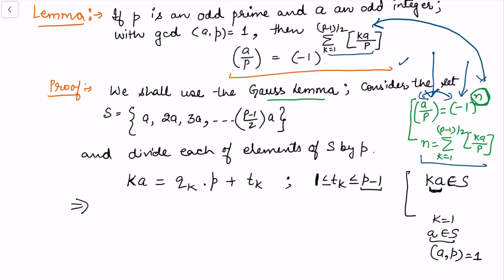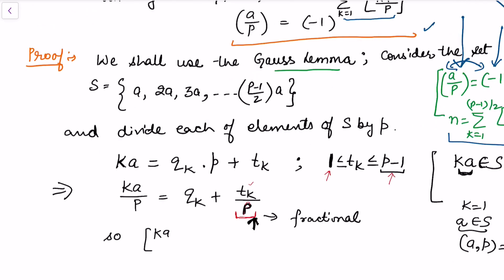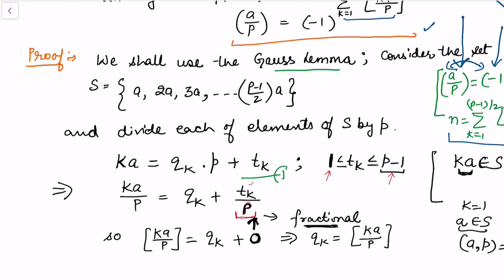Dividing the equation ka = qk · p + tk through by p gives ka/p = qk + tk/p. Since tk ranges from 1 to p-1, the term tk/p is strictly fractional. Taking the greatest integer function on both sides, floor(ka/p) = qk, since the fractional part tk/p contributes 0 under the floor function.